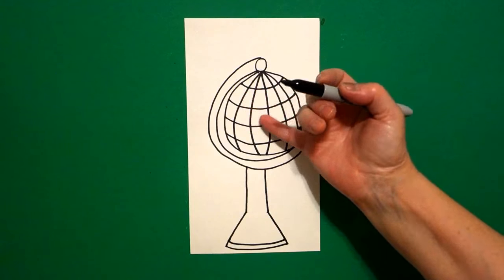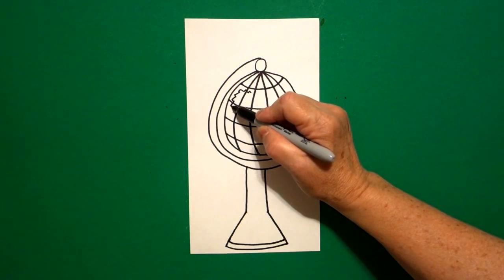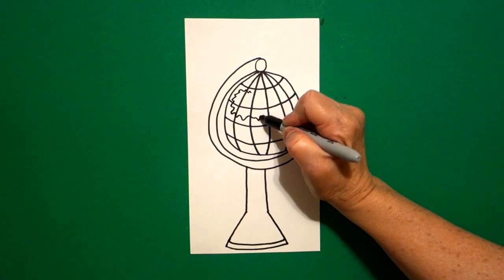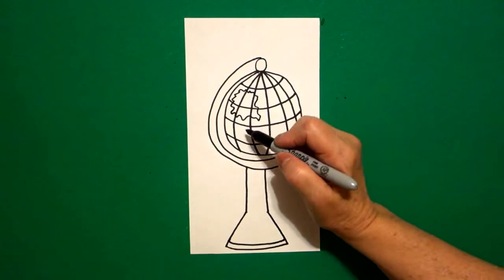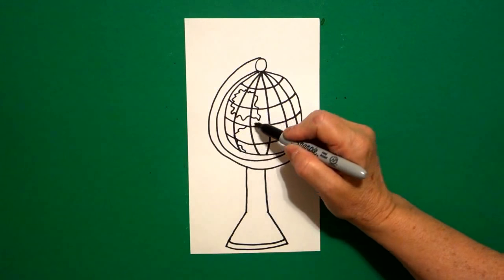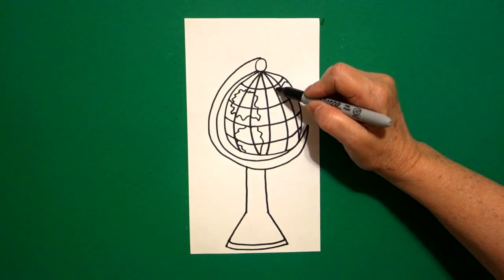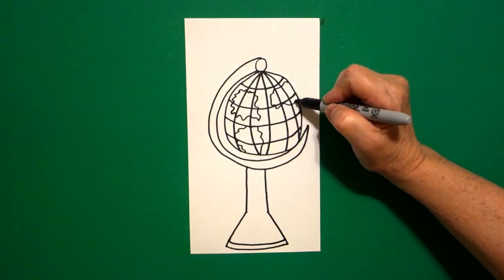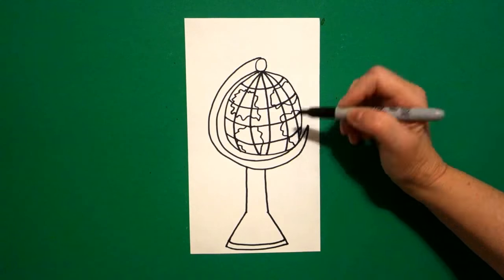Now on the inside, I'm just going to draw some wavy, wavy, curve lines, wavy, wavy, curve line, connect. These are not actual continents. I'm just making some wavy, curve lines, connect, wavy line, curve line, wavy, wavy, wavy to fill in.